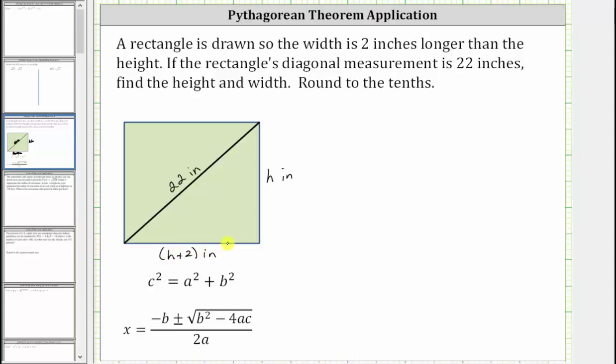Now from here, notice how the diagonal cuts the rectangle into two right triangles. And therefore we can use the Pythagorean theorem, which is c squared equals a squared plus b squared, to determine the height and the width. Where c is the length of the hypotenuse, this length here. And a and b are the lengths of the two legs, which are the two sides that form the right angle.